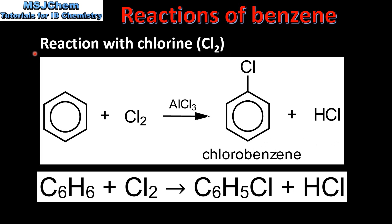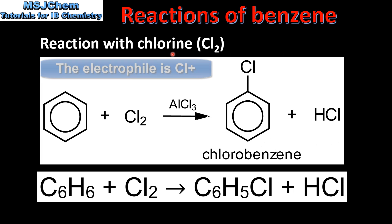Next we'll have a look at the reaction of benzene with chlorine. Here we have benzene reacting with chlorine in the presence of aluminium chloride to produce chlorobenzene and hydrogen chloride. The equation for the reaction is: benzene plus chlorine forms chlorobenzene plus hydrogen chloride.